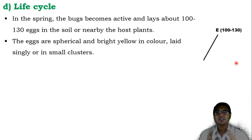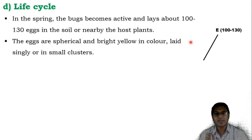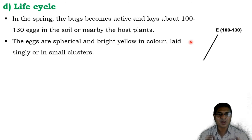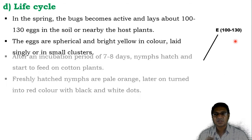Moving to the life cycle: in the spring season, the bugs become much more active, and after mating, the female lays about 100 to 130 eggs in the soil or nearby area of the host plant. The eggs are spherical and bright yellow in color, laid singly or in a cluster consisting of around 10 to 40 eggs in a group.